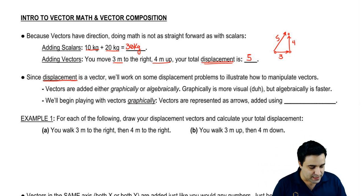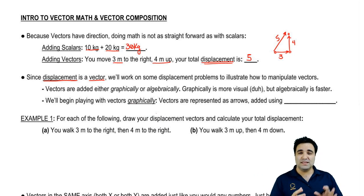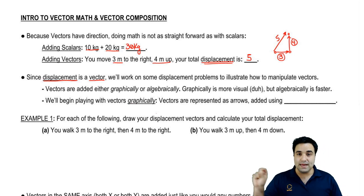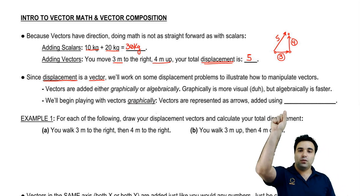Because displacement is a vector, we're going to work through a lot of displacement problems to illustrate how vectors work. So anytime you think of vectors, think of displacement and we're just going to be walking around in different paths and seeing how that stuff works. Vectors can be added, they can be combined. This is basically vector addition right here: 3 and 4, I walk 3 plus 4 going up, we're adding them.